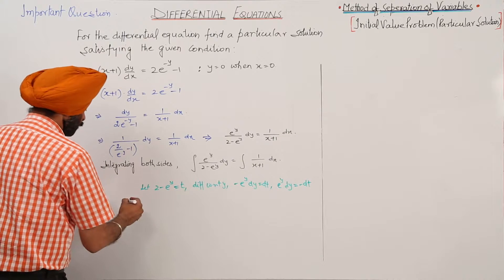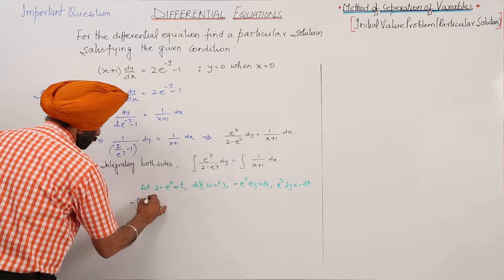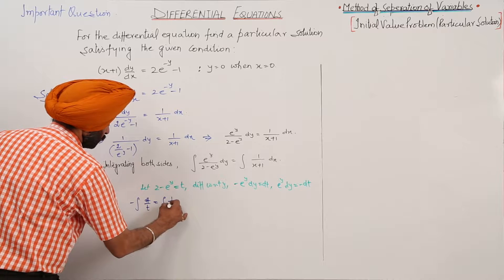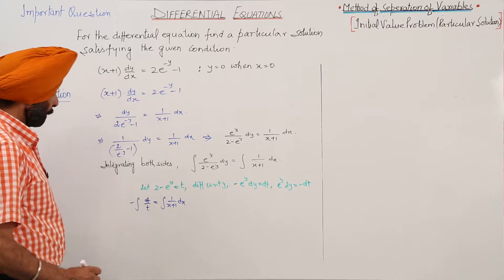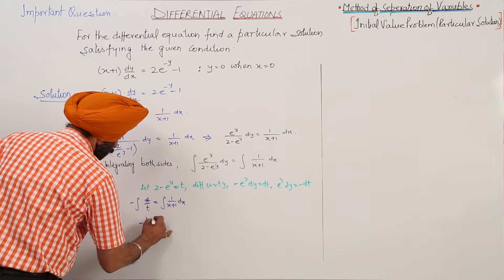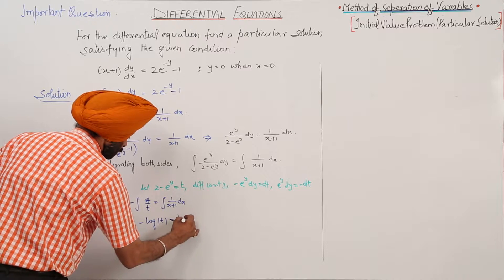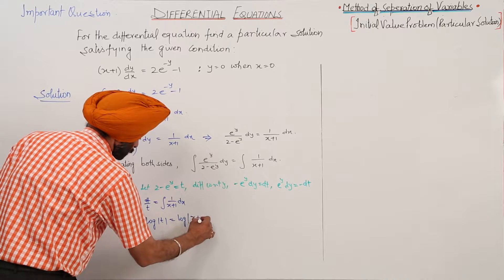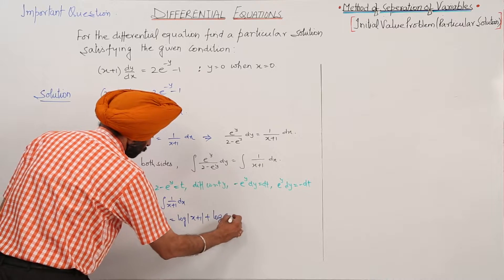The integral becomes: negative integration of dt upon t is equal to integration of 1 upon (x + 1) dx. So negative log|t| is equal to log|x + 1| plus log c.